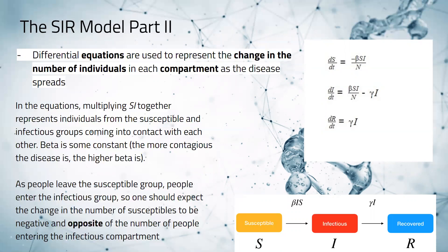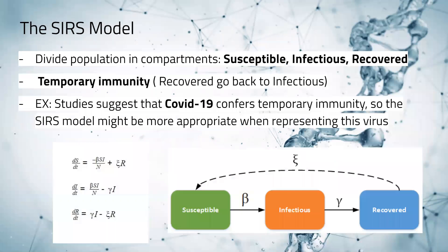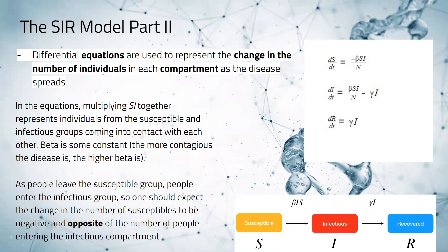In the infected group, we also have to account for the number of people moving to the recovered group. That is denoted as gamma times I, and that's why it's being added to the recovered group equation.